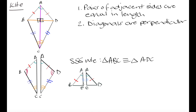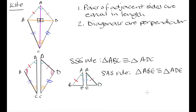So we have this side, this angle, and this side which are equal between our two triangles. By the side-angle-side rule, triangle ABE is congruent to triangle ADE. And if these triangles are congruent, then all of their corresponding sides and angles are congruent. The important result is that side BE is equal in length to side DE — let's label that as X.